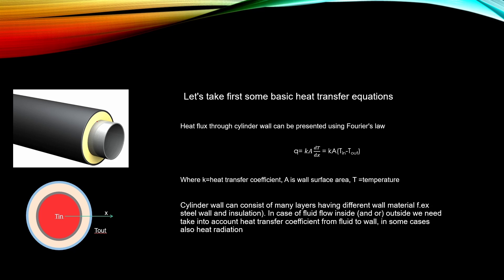This insulation can consist of many layers, not only one — there can be different materials. If we want to calculate the heat loss from this kind of application, we can use so-called Fourier's law, which states that the heat loss to the environment is the heat transfer coefficient times the surface area times the temperature difference between our hot fluid and the environment.